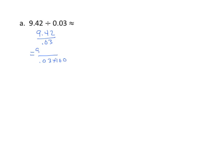And we have 9 and 42 hundredths times 100. And we get, and again, notice what we're doing here. We're actually going 1, 2, 1, 2, right? And we'll get 942 divided by 3.